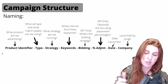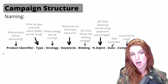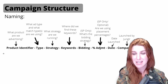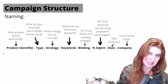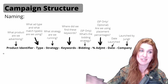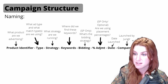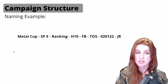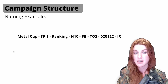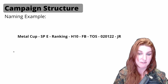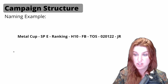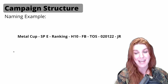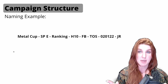We also like to put the launch date, and then a tag indicating who launched it — for instance, our agency tag — so we know whether it's one of ours or a legacy campaign. The date launched is helpful especially in search term reports; if Amazon sends a recommendation on a campaign launched just a couple days ago, you might know it doesn't make sense to over-optimize yet. Here's a quick naming example: 'metal cup - SPE - ranking - H10 - FB - TOS - [date] - JR.'